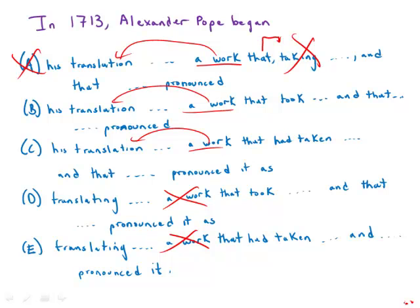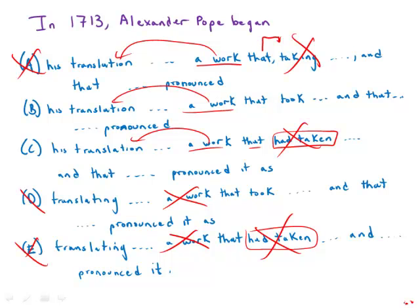Looking at what follows 'that' in the other cases: B has 'that took' — that's fine. C has 'that had taken,' and E also has 'had taken.' The past perfect is usually used to refer to something that happened before another event, but the first thing in the sentence talks about when Alexander Pope began this process, so everything would happen after that beginning. The past perfect is therefore wrong, so C and E are out. That narrows things down pretty nicely to B.